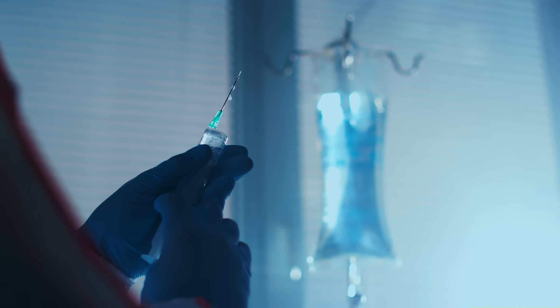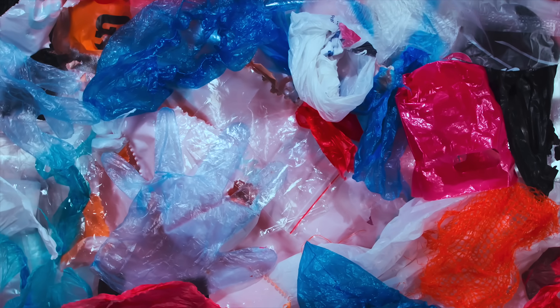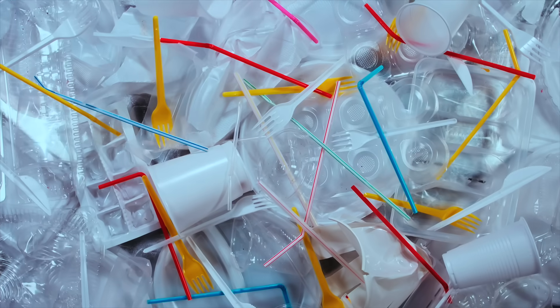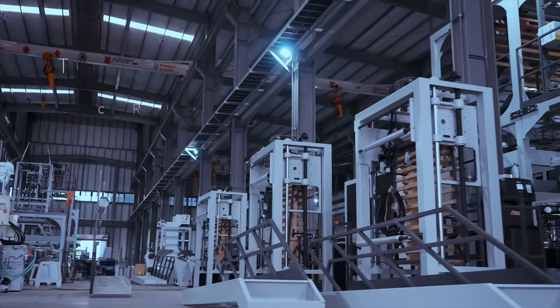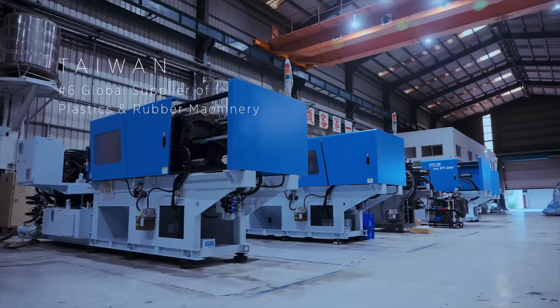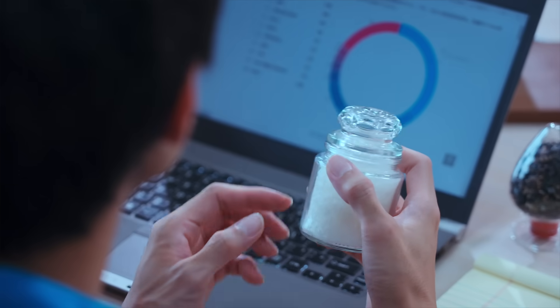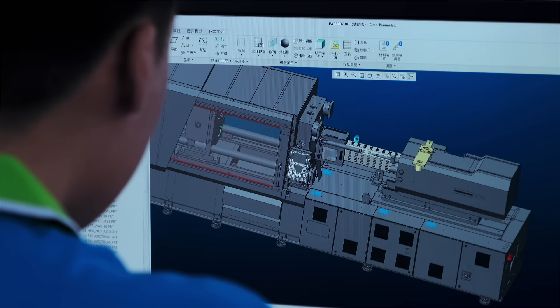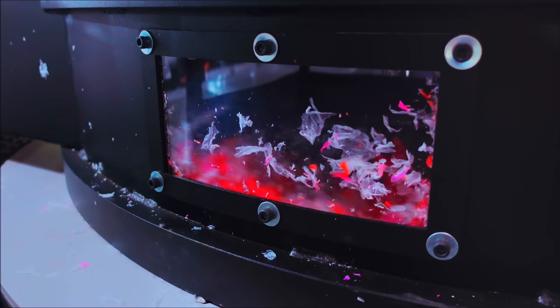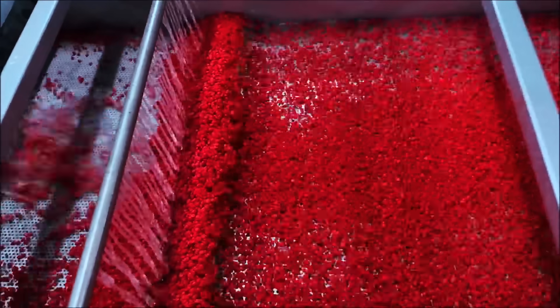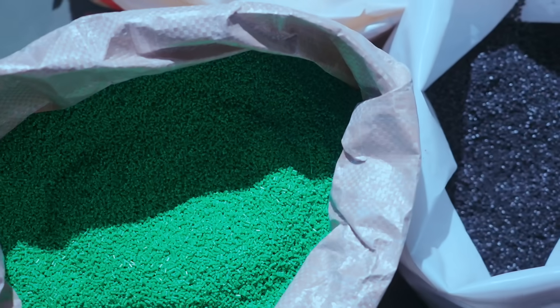Plastic products are virtually synonymous with convenience. But as plastic reduction policies take shape across the globe, Taiwan's position as the sixth largest global supplier of plastics and rubber machinery puts it in a key position in developing new ways to use innovative green materials and gradually build a new plastics economy that incorporates production, recycling and reclamation.